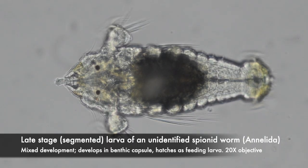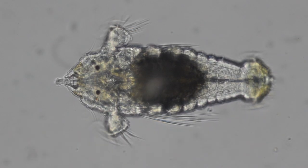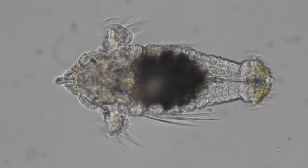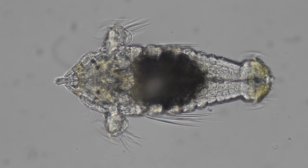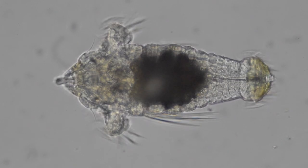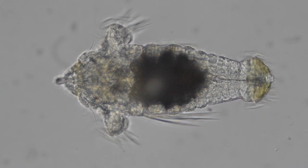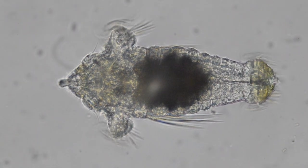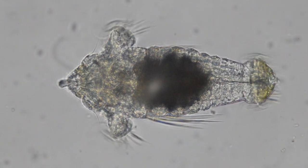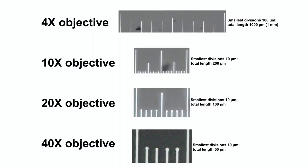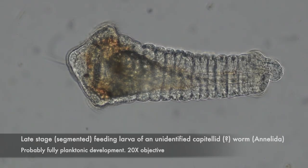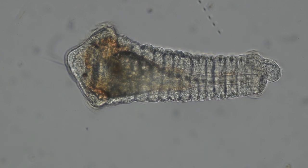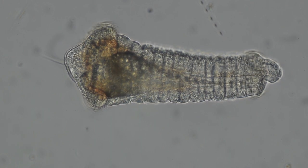There are lots of annelid larvae in our local plankton. Here's a late stage larva of a spionid annelid. In addition to the anterior prototroch, you can see another ring of cilia that it uses for swimming at the posterior end — that's called a telatroch. And here's another annelid, what I think is a capitellid, though it could be a member of a closely related group. This is a feeding larva; it also has a telatroch.